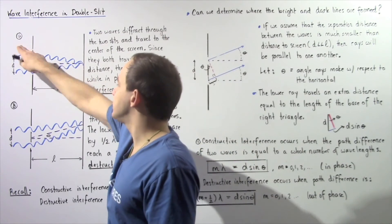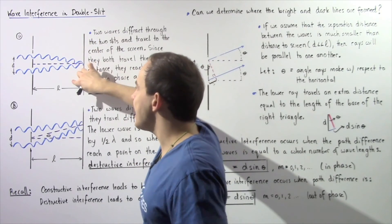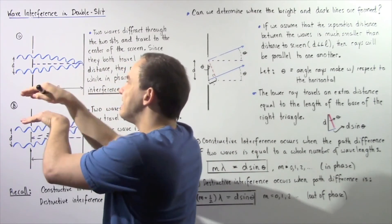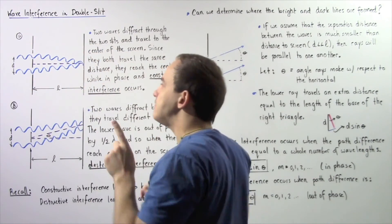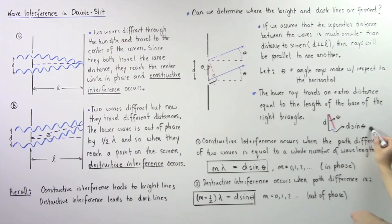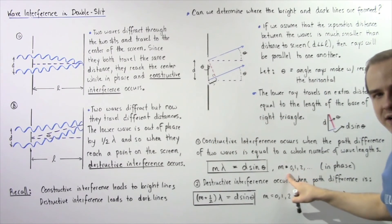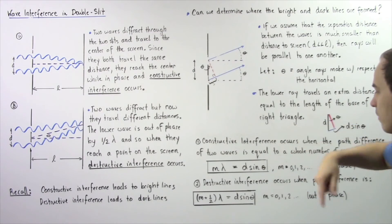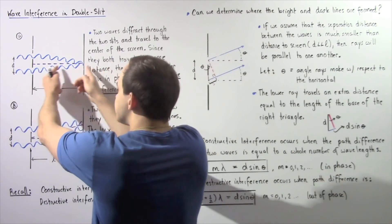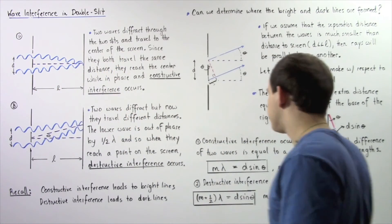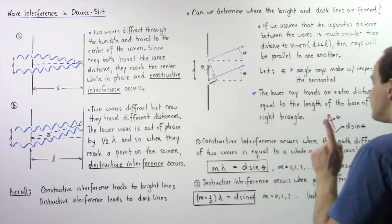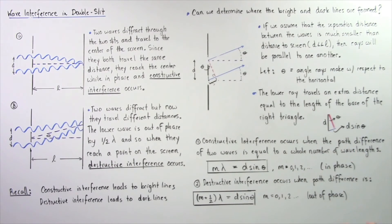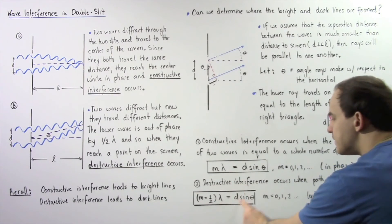Looking at diagram A, in this case the two waves begin in the same phase and end up being in the same phase because they travel the same distance. So the path difference is 0 and m is 0, but it works as well if m is 1, 2, or 3 — meaning we shift the entire wave to the right or left. Destructive interference occurs when the path difference follows a different equation — it's no longer a whole number multiple of the wavelength.